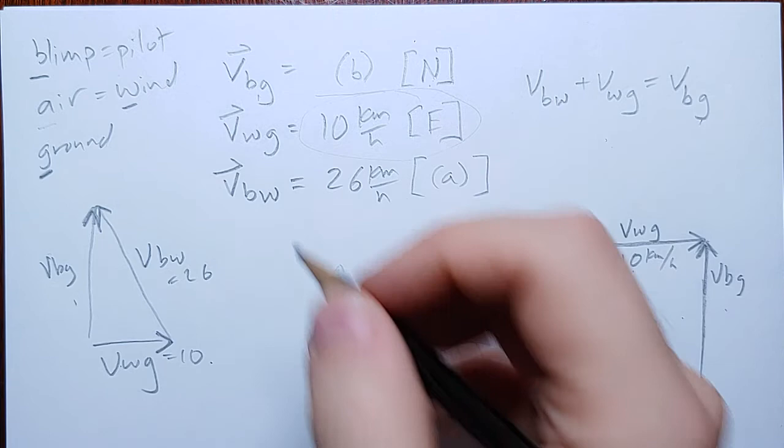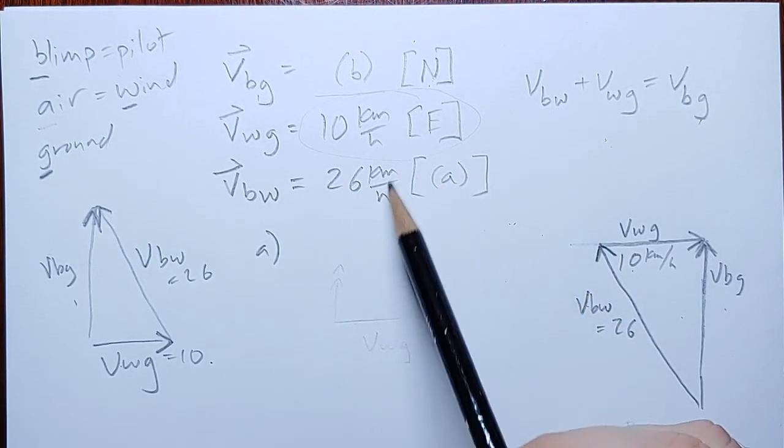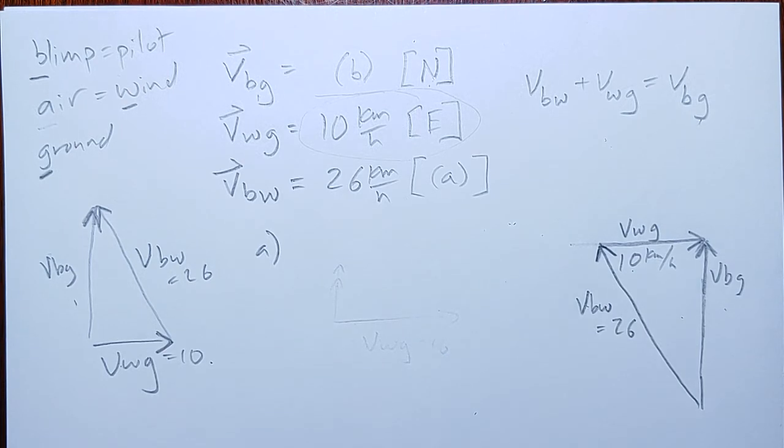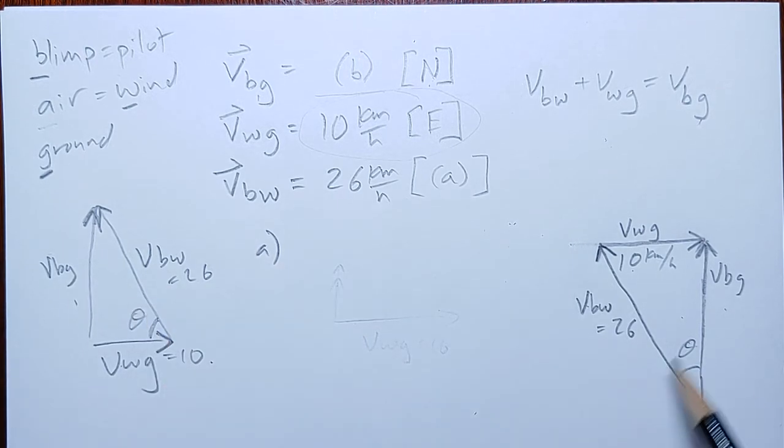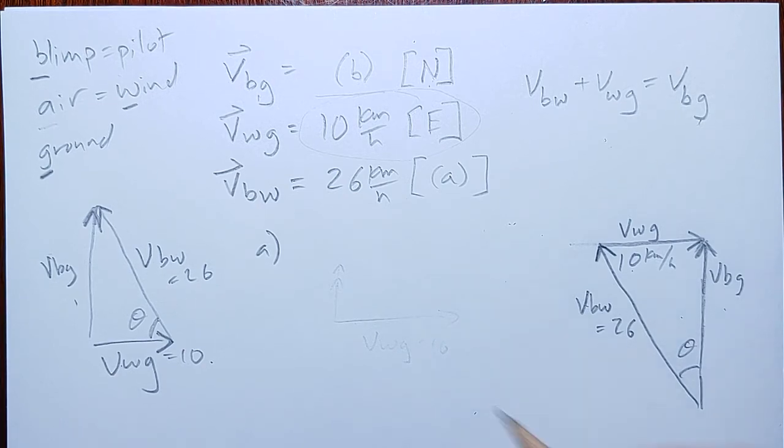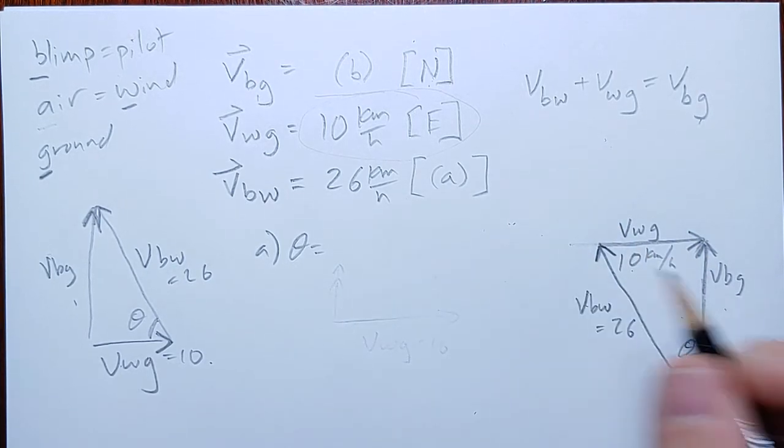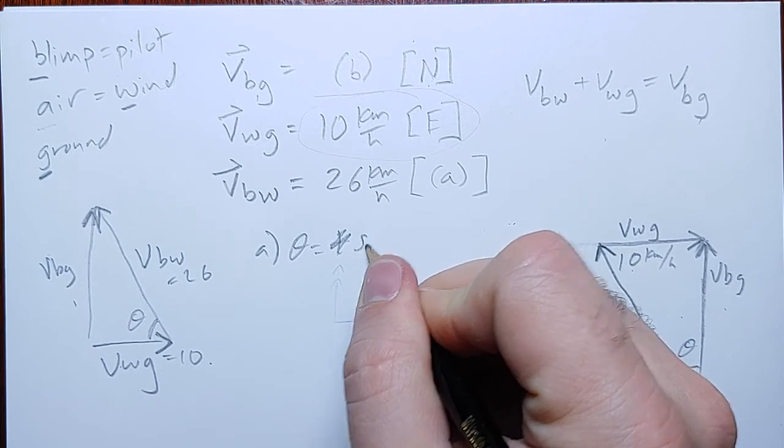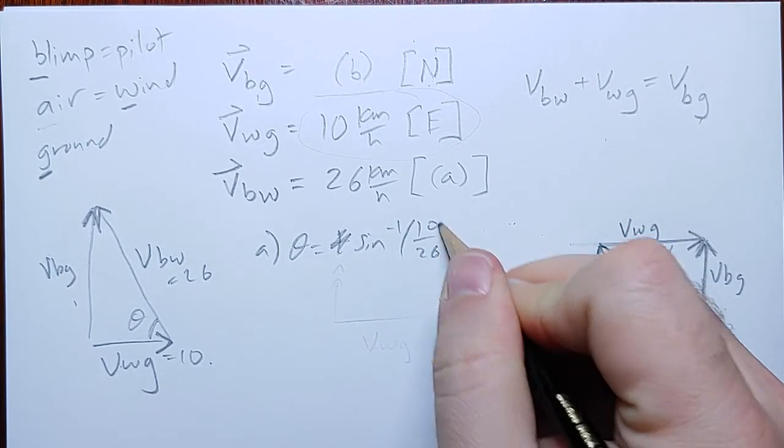So then to actually solve it, part a, we want the heading, which we said was the angle the blimp is moving at compared to the wind. So that's going to be either this angle or the alternate one is here. So I'm going to find the west of north angle, but you could find the north of west angle, and they'll mean the same thing. So that's going to be opposite and hypotenuse, the arc sine, 10 over 26.